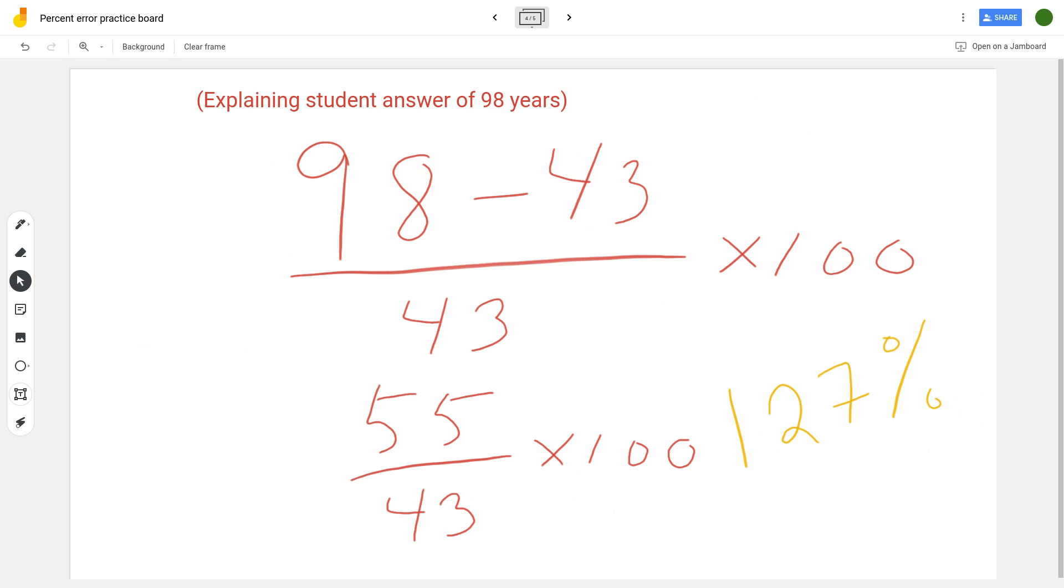As the accepted value, and then we multiply that by 100 and we get an error of 127 percent. All right, this is a very large error. In fact it's bigger than, the error is bigger than 43, so we actually get more than 100 percent error.